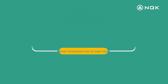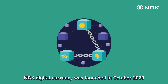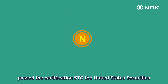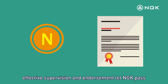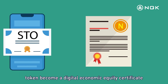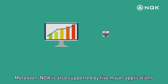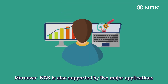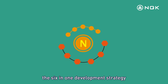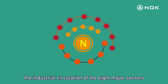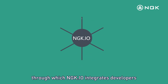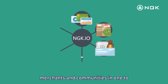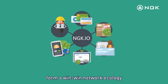Issuance Mechanism: NGK Digital Currency was launched in October 2020 on the independent blockchain, passed Certification STO by the United States Securities and Exchange Commission, and was issued through equity endorsement. Effective supervision and endorsement let NGK PASS token become a digital economic equity certificate. Moreover, NGK is also supported by five major applications, the 6-in-1 development strategy, and the industrial circulation of the eight major sectors, so as to realize the landing of the blockchain project in all directions. Through this, NGK.io integrates developers, merchants, and communities into one to form a win-win network ecology.